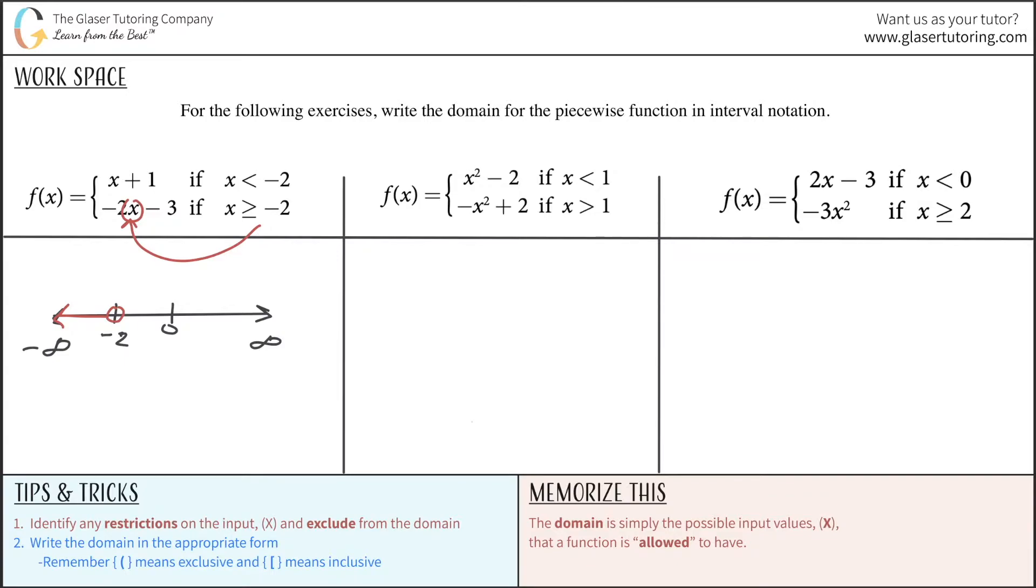There's no problem plugging in a negative or positive value, whatever value you wanted here. This equation is always going to work, and therefore this whole domain is good to go. It works for this given equation. Now, since it says equal to negative two, I'm going to fill this circle in. And then greater than, I'm going to shade this way.